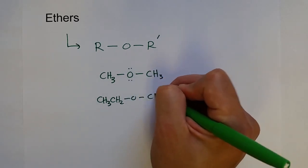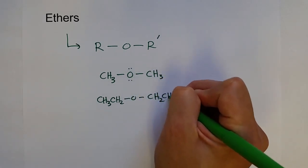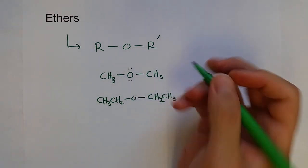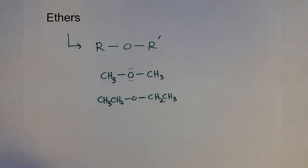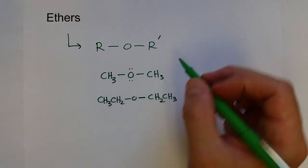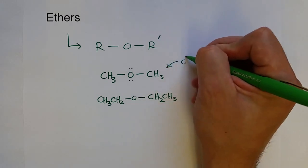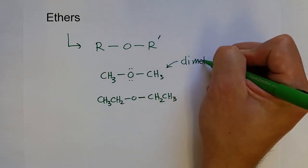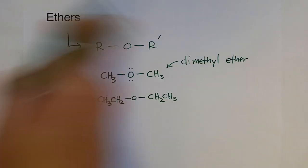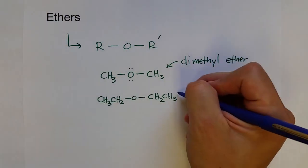Or it can be CH3CH2-oxygen in the middle-CH2CH3. These are normally named by naming both sides as a function of what side chain or group they are, so this would be dimethyl ether and this would be diethyl ether.